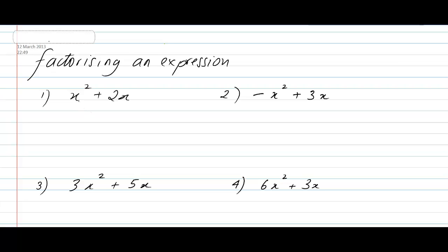Let's look at question number one: x squared plus 2x. When you are factorizing an expression, the first thing I want you to do is look at the numbers. We've got 2 here and also a number you can't really see, but it does exist — and this number is a 1. Whenever you have a letter on its own, there's always a 1 in front of it. So ask yourself: what is the highest number that goes into 1 and 2? The highest number that goes into 1 and 2 is 1, so write down the 1.